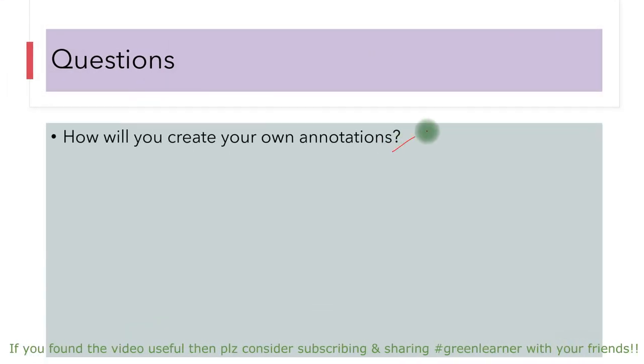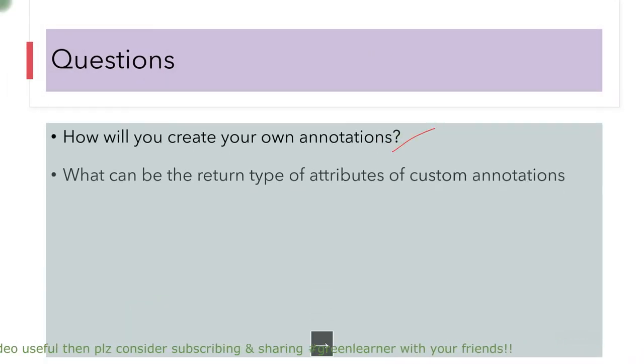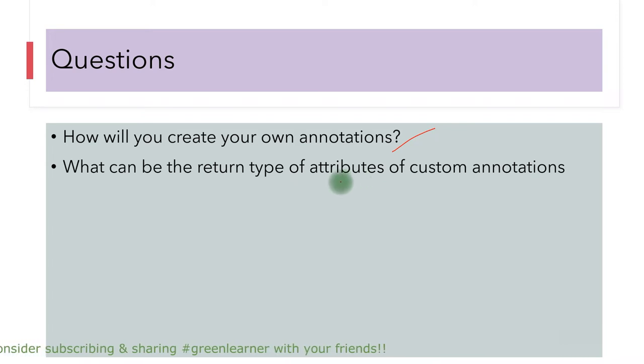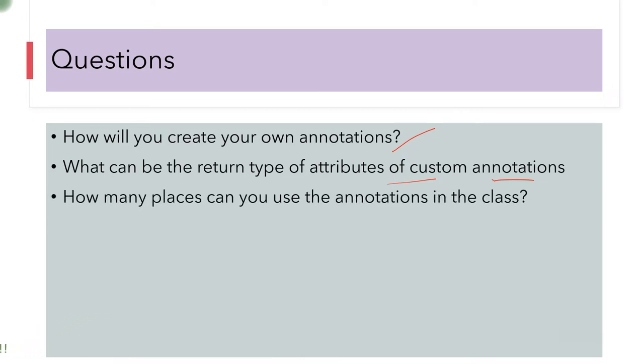How will you create your annotation? This is covered in custom annotations. What can be the return type of attributes of custom annotations? Anything that you want. How many places can you use the annotations in the class? You can use it at class level, constructor, field, method, even method arguments level.